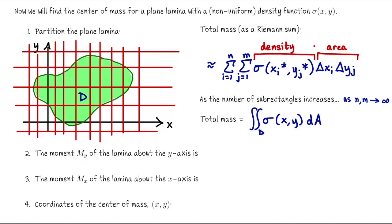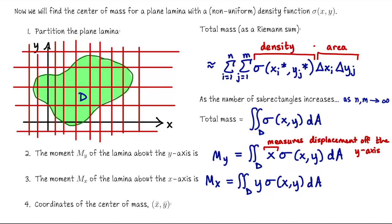The moment m sub y for this lamina measures how the mass is situated horizontally. We take that density function and we scale it by x. The reason why we scale it by x is because that's measuring the displacement off of the y axis. Similarly, m sub x would be calculated by taking the double integral of y times sigma of x and y. After computing really three integrals, so we have the total mass, m sub y and m sub x, then the coordinates of the center of mass is denoted x bar y bar. It's m sub y divided by m that gives you the average x coordinate, and then m sub x divided by m to get your average y coordinate.